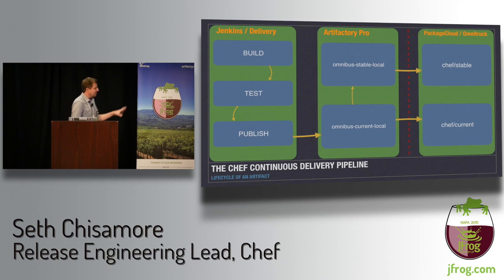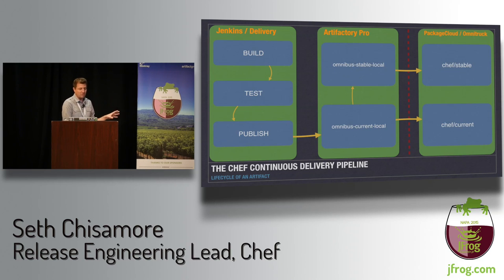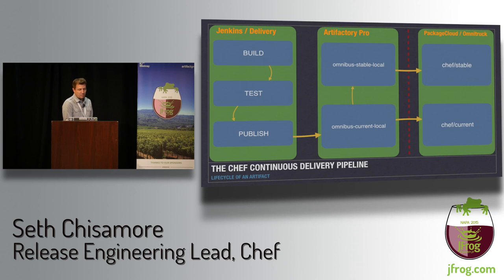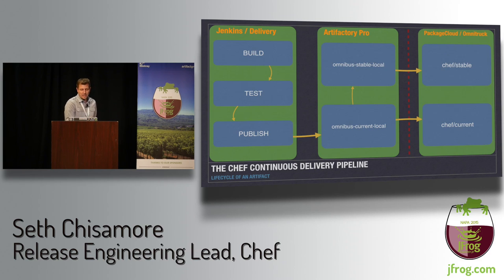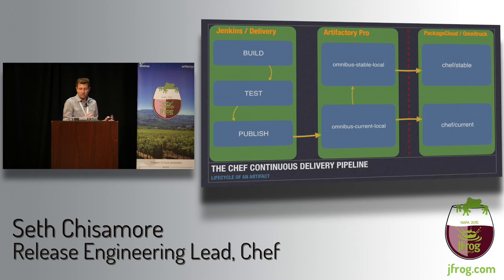This is a high-level diagram showing what our software shipping pipeline looks like. We've got three different systems — the green boxes. We currently use a mix of Jenkins and Chef Delivery for doing CI, shown in the left box. These systems publish out into our Artifactory Pro instance, which serves as a system of record for all our builds. That red dotted line represents the division between internal and external — CI and Artifactory are internal only.